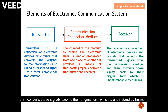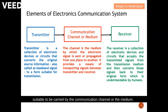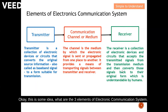The receiver converts those signals back to their original form, which is understandable by humans. So to summarize the three elements of an electronic communication system: the source of information originates at the transmitter, which converts the signal to a form suitable for the communication channel or medium. When the signal propagates through the medium it reaches the receiver, which converts it back to a form recognized by humans.